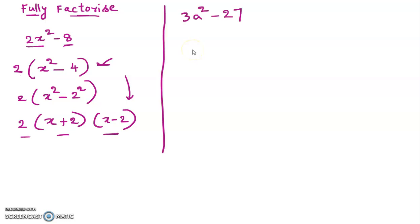Let us do one more problem. Fully factorize 3a² minus 27. The first term has a² but the coefficient 3 cannot be written in the form of a perfect square. So we can't solve this problem directly in the form of a² minus b².